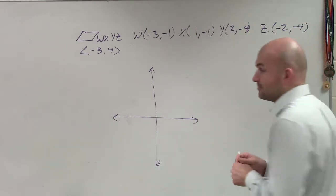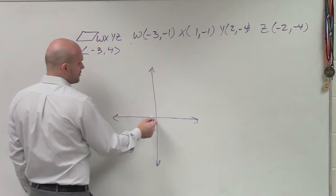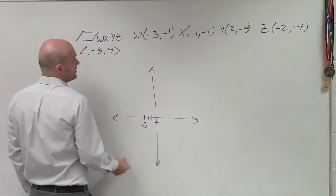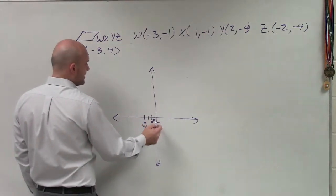Or at least to remember going back to plotting points. So first point is negative 3, 1, negative 1. So that's W. Next point is 1, negative 1. That's X.